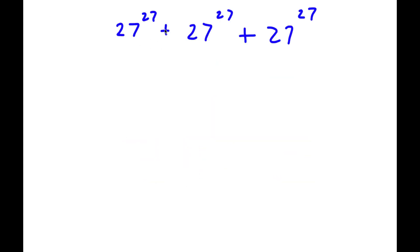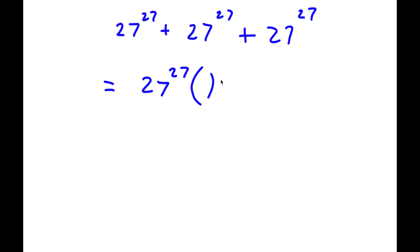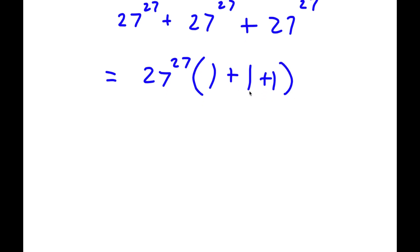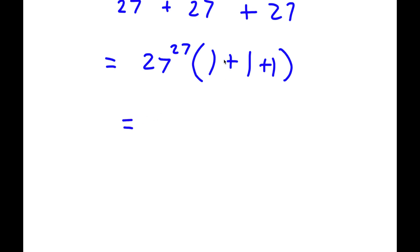Alright, so I have 27 to the power of 27 plus 27 to the power of 27 plus 27 to the power of 27. The first thing I'm going to do is factor out 27 to the power of 27. So now I have 27^27 times the quantity in brackets: each term divided by 27^27 is 1, so I have 1 plus 1 plus 1. Now 1 plus 1 plus 1 is 3, so I have 27^27 times 3.